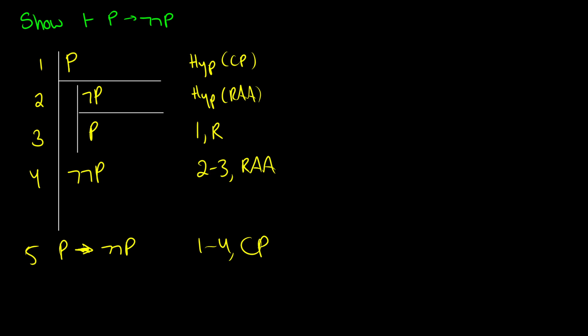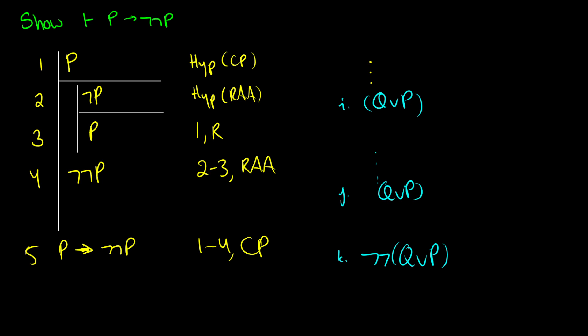This is like doing double negation in the opposite direction. Imagine I'm somewhere in a proof and I have Q∨P and I'm trying to get ¬¬Q∨P. Double negation removes two negations, but now I can introduce the theorem in line J: if I have Q∨P then I have ¬¬(Q∨P) — and this is just a theorem. Then in line K I can apply it to Q∨P to get ¬¬(Q∨P). It speeds things up.